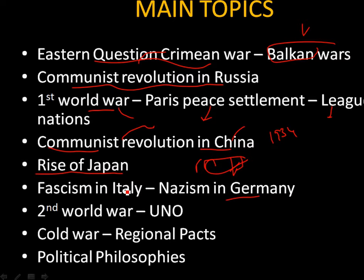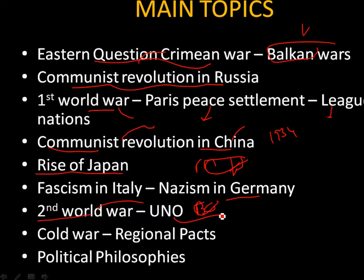In the Second World War and the UNO, the main areas are the causes of the Second World War, the important battles, the consequences of the war, and also the origin, objectives, and achievements of the United Nations Organization.